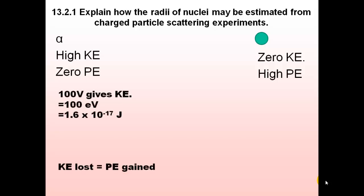So this is quite easy. If you know that you're accelerating a particle through 100 volts, you're giving it 100 electron volts, or 1.6 times 10 to the minus 19 times by 100, and this is the number of joules that we'll be given. This is all going to be turned into potential energy.